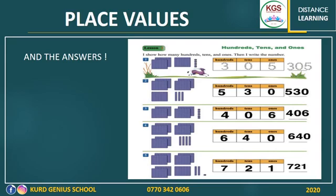Number four. How many ones do you see? Nothing. What about tens? One, two, three, four — there are four groups of ten, so the value of four in this number is 40, not four. What about the hundreds? One, two, three, four, five, and six — there are six groups of hundreds. So this is number 640.